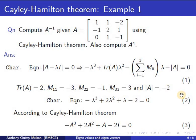According to Cayley-Hamilton theorem, we have minus A cube plus 2A squared plus A minus 2I equal to 0, which is obtained by replacing lambda by A in equation 2 and the constant term 2 is replaced with 2I.